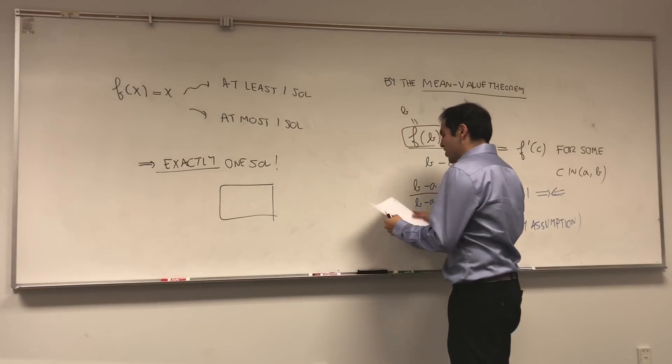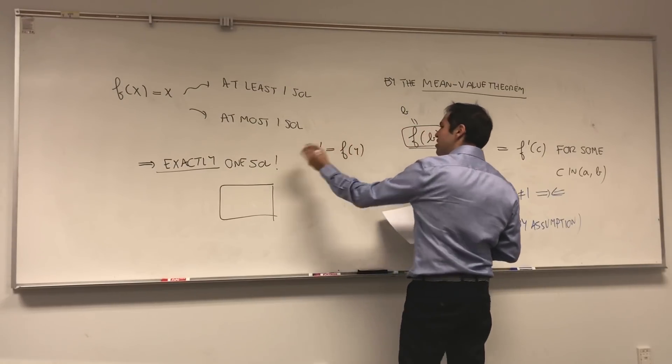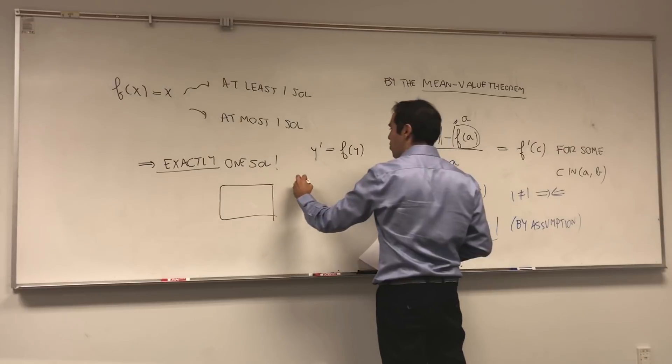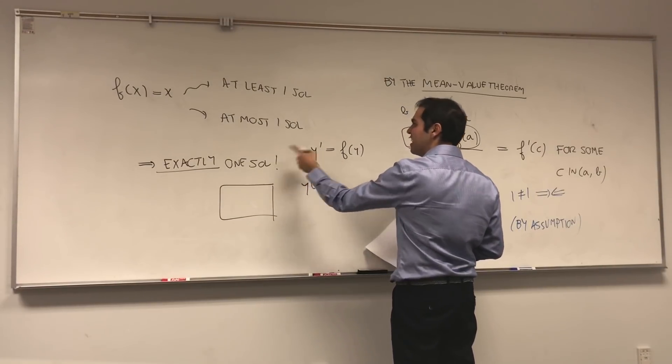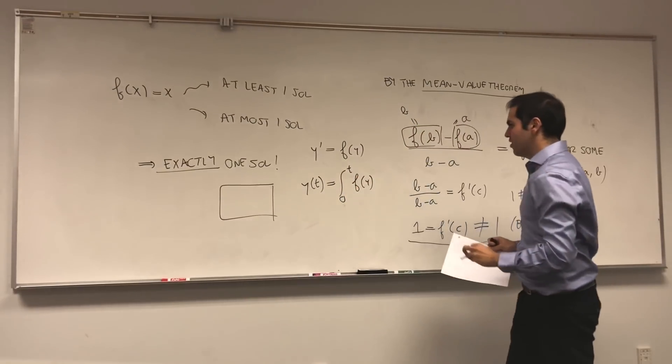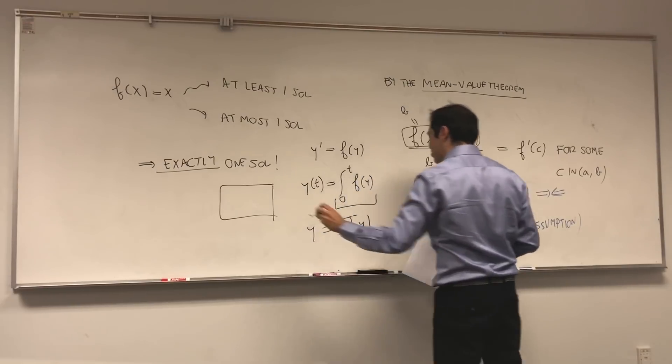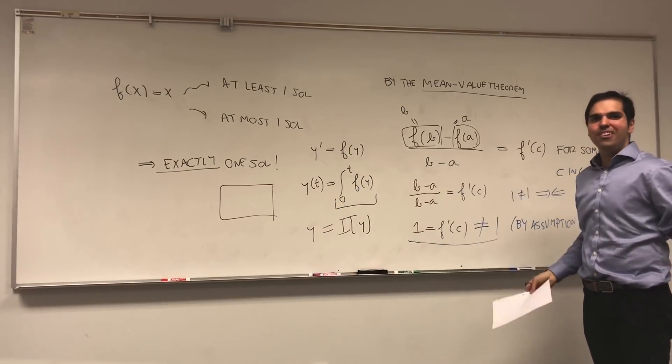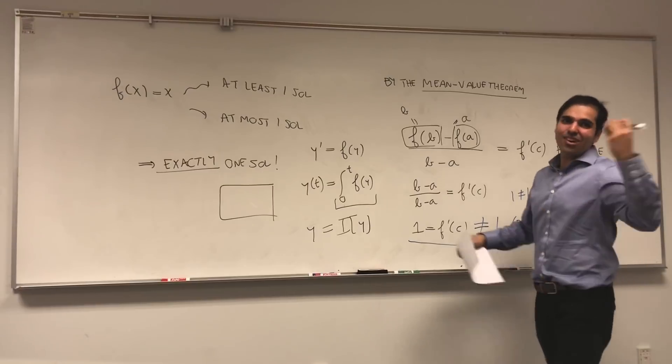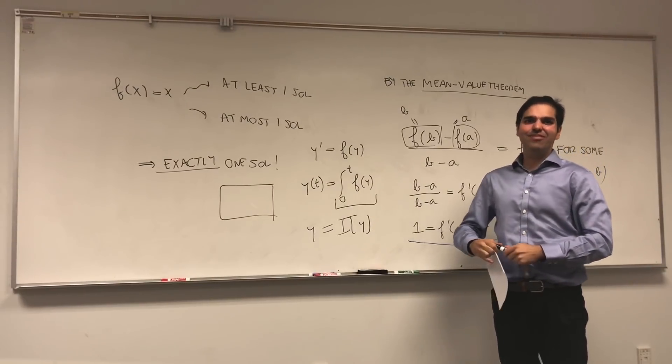Lastly, if you want to show that ODEs have at least one solution, let's say y' equals f(y) has at least one solution, in fact, you can write this as a fixed point problem. Because by integrating and assuming that y(0) equals 0, you can write this as this. In other words, you have this operator, let's call it i(y), y equals i(y). And if you can show that somehow this operator has a fixed point, then it gives you a solution to your ODE. And so fixed points are really cool, and in particular, they're great application of the mean value theorem and the intermediate value theorem.